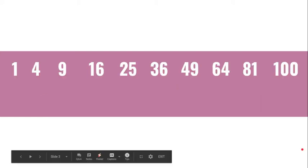So I want you to take a look at these numbers. So this is a bunch of different numbers. So we've got 1, 4, 9, 16, 25, 36, 49, 64, 81, and 100.